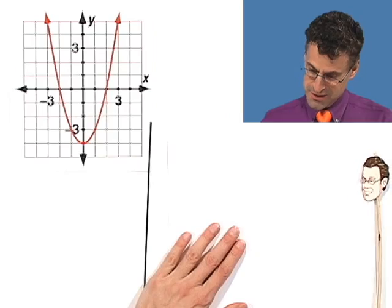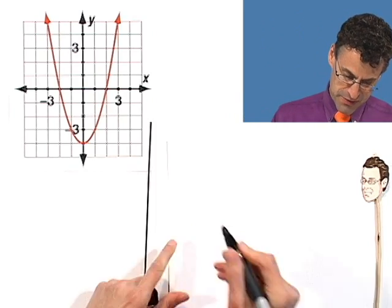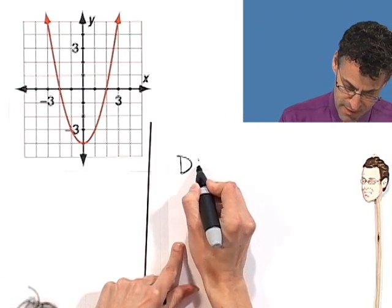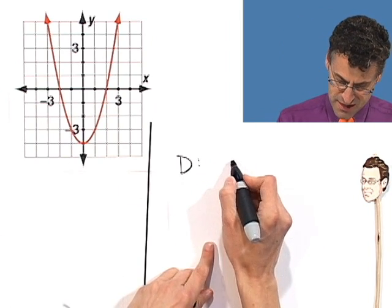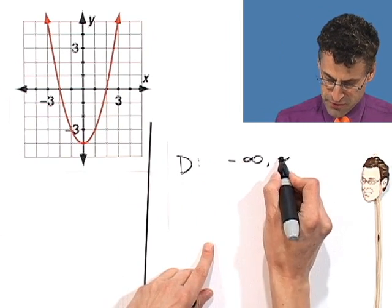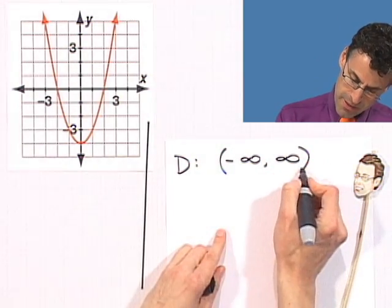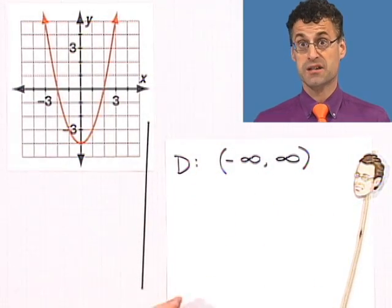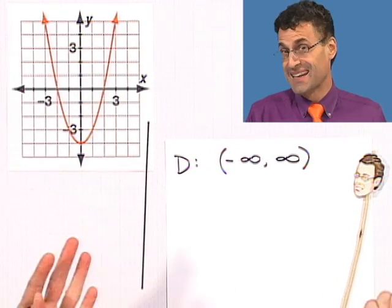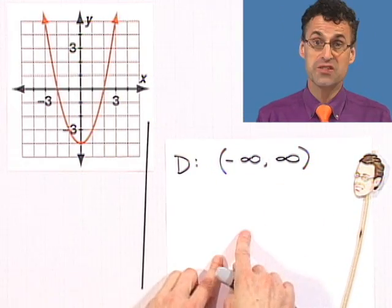It's totally fine. So the domain here is the entire real numbers. I'd write that the domain is all the real numbers — you can go from negative infinity all the way to infinity. Of course, infinity and negative infinity aren't numbers, so we grab them with open parentheses, because we can go as far as we want but there's no such thing as infinity as a number. So we write it as (-∞, ∞).